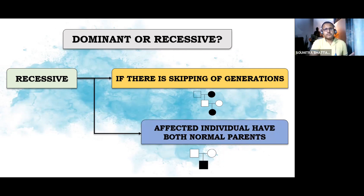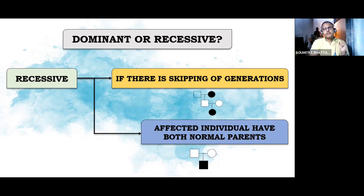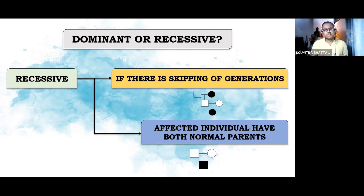In the opposite sense, if the trait is present in each and every generation, then the pedigree will be a dominant case. So for the first type of question — dominant versus recessive — you have to check the presence of the trait in each and every generation. Just check that, and you will be able to easily decide whether it is a dominant or recessive one.